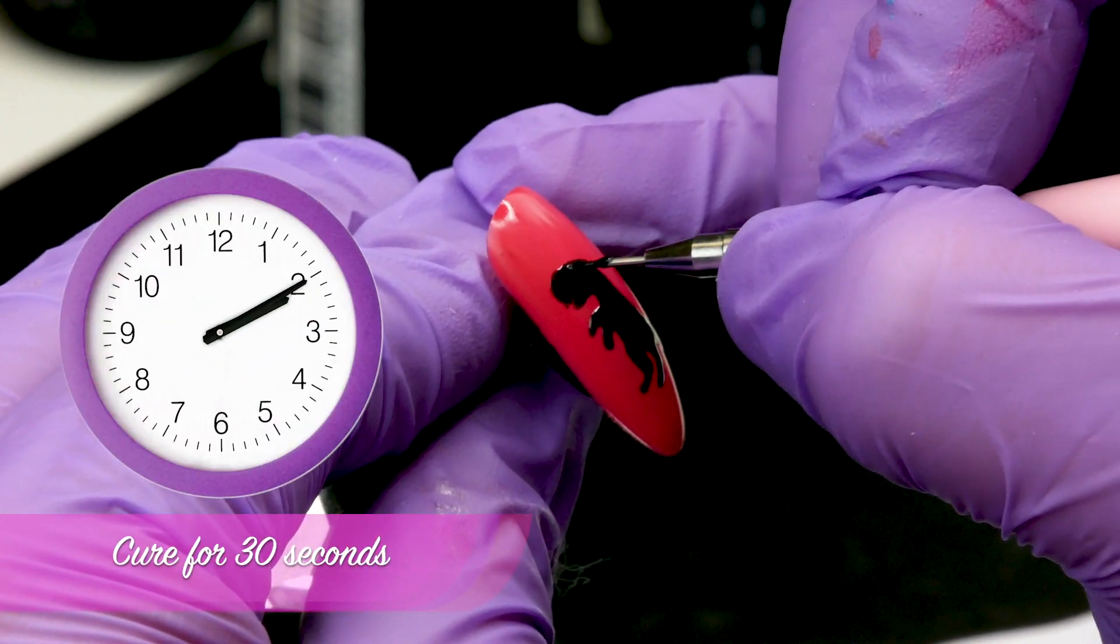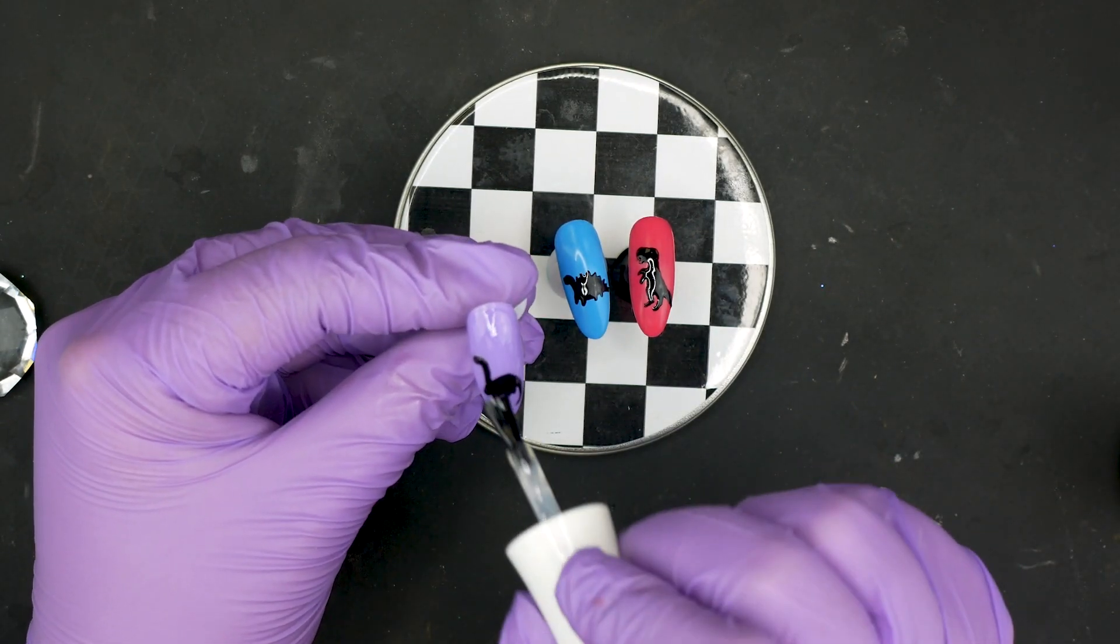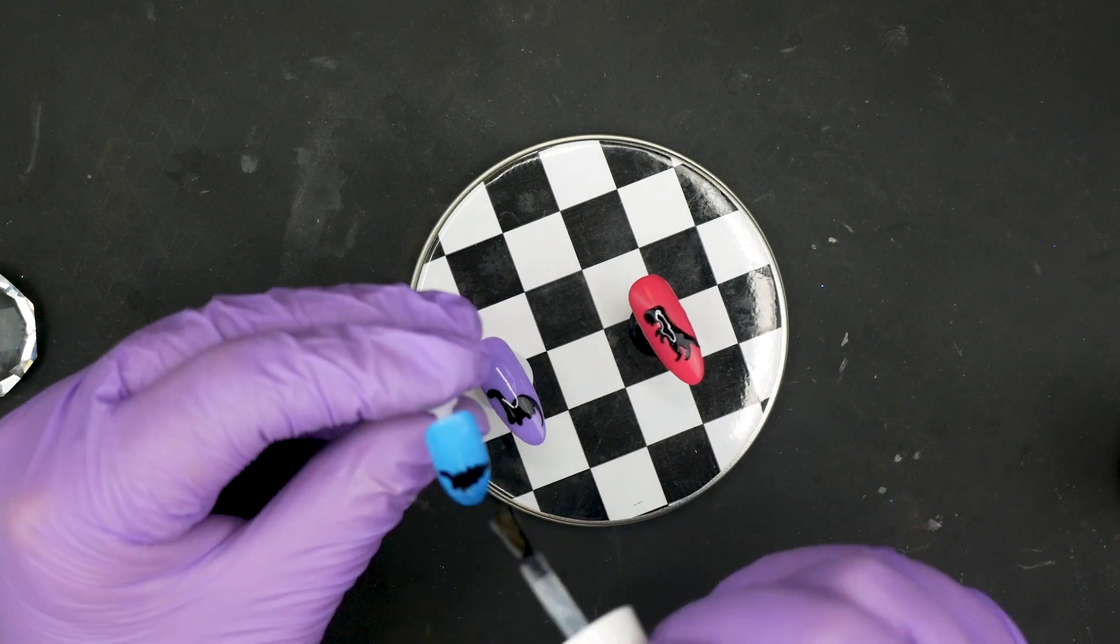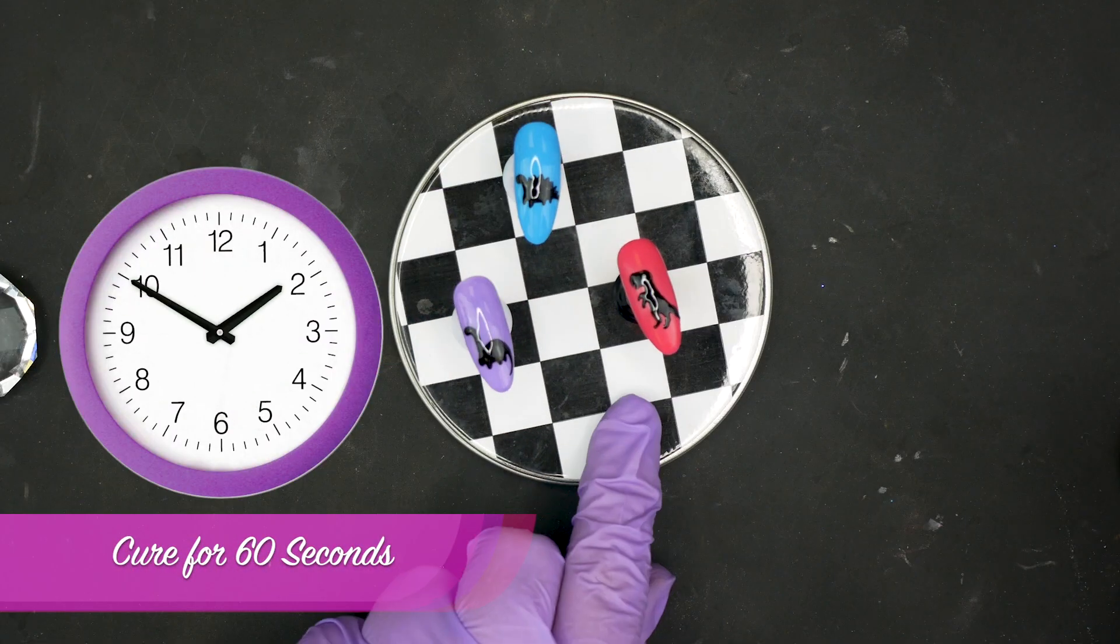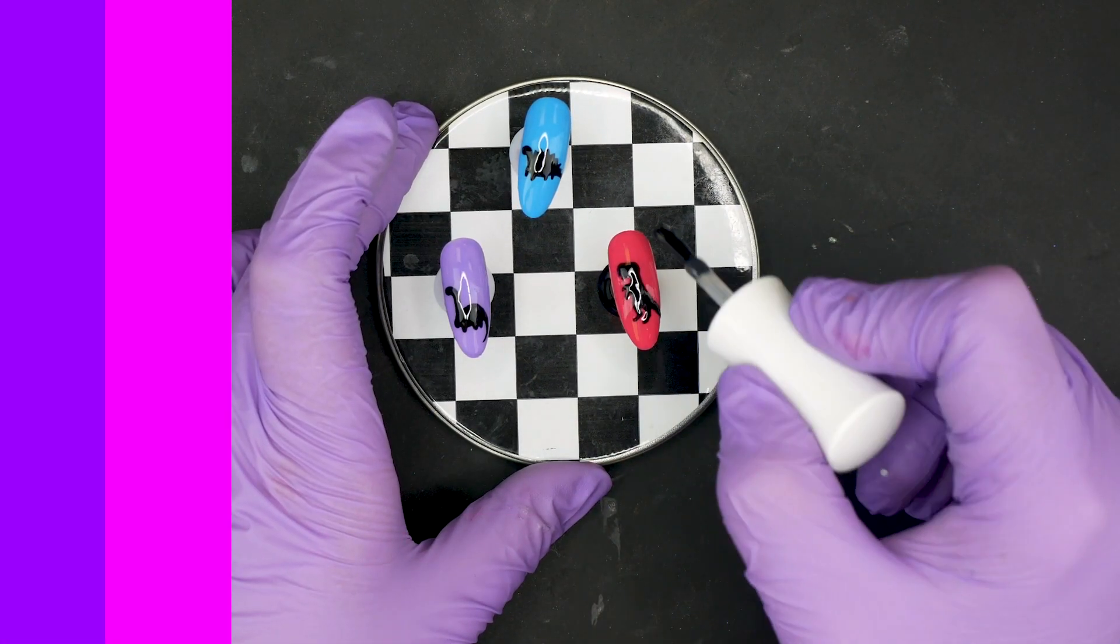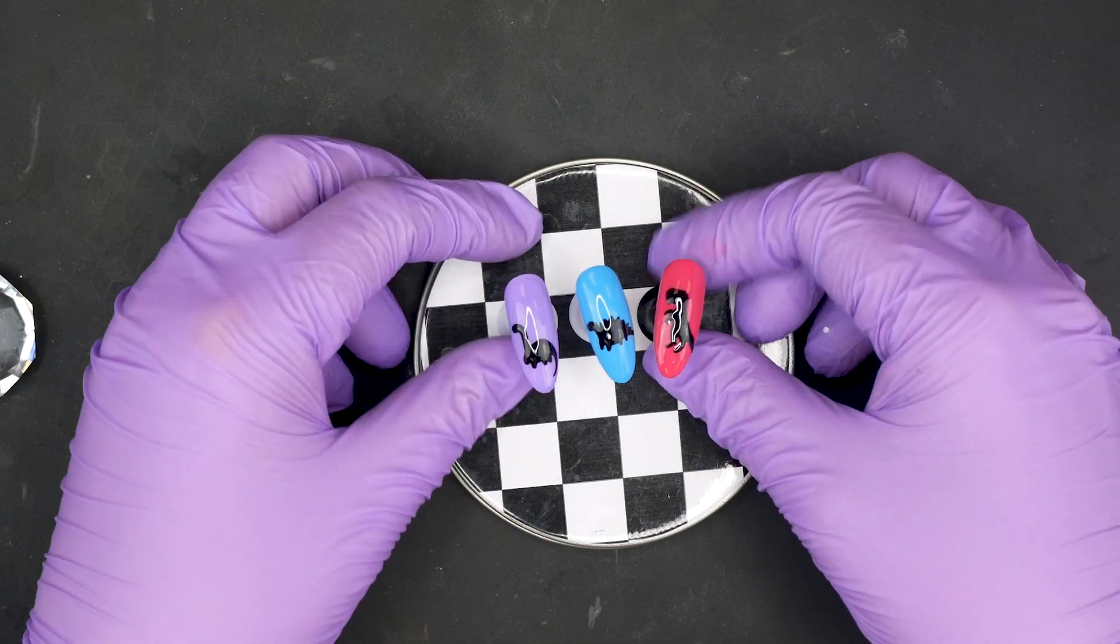Pop that one in for 30 seconds and then we go in with the Urban Graffiti top coat. Top coat these and pop them in the lamp for 60 seconds.